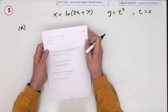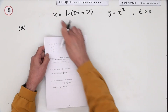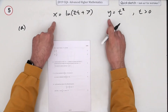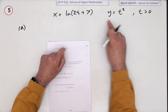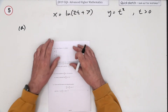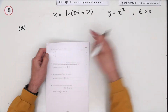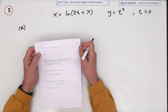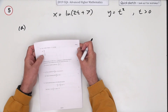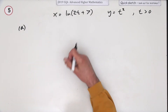Number five from the 2019 Advanced Higher Maths. The parametric equations x and y are specified independently in terms of the parameter t — usually time — with friendly brackets because t is greater than zero. The question asks to find the first and then the second derivative, dy/dx and the second derivative.